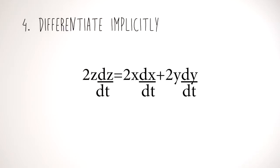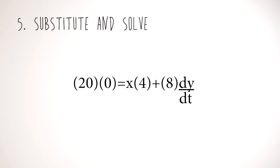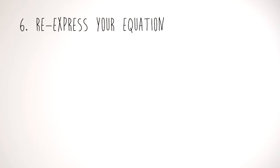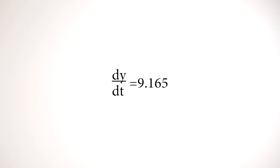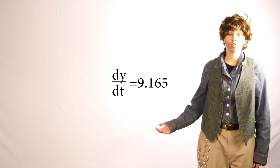Now we have to implicitly differentiate it and take the derivative of the equation. That simplifies to z·z' = x·x' + y·y'. The next step is to substitute the numbers in for z, z', x', and y. We also find the remaining unknown variables using the Pythagorean Theorem once again. After that, we solve it all out and get our answer, which is 9.165 equals y'. This means the tree is sliding down at 9.165 feet per second. Oh boy, I hope I'm okay.